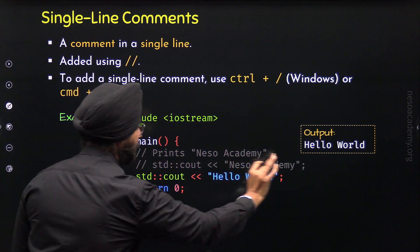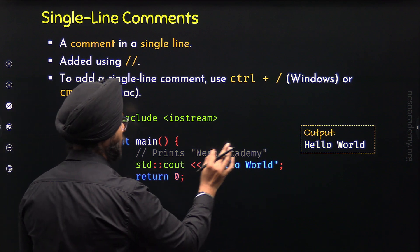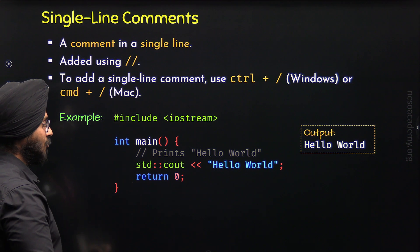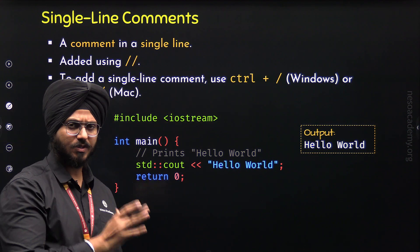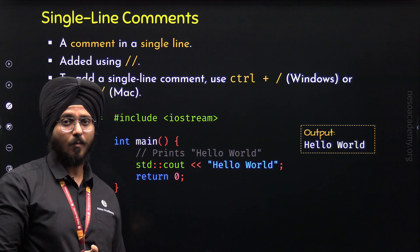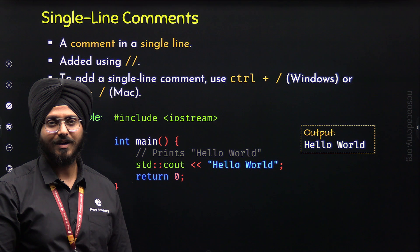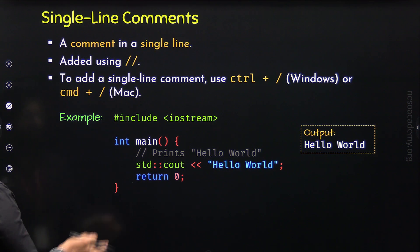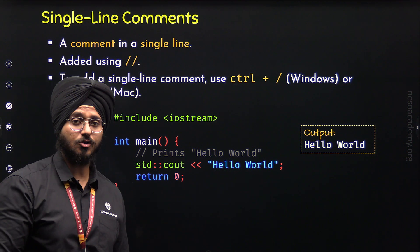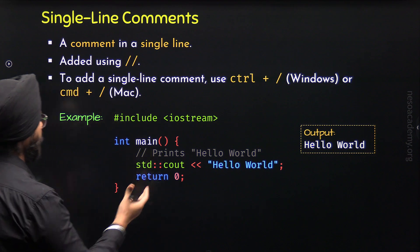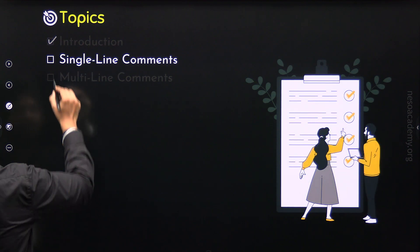So we kept the old version of the code and tested the new version. The new version is working correctly, so now we can remove the old commented-out line. We can update the comment to say 'Print Hello World' to make it clearer. In this way, with the help of a single line comment, we can comment out a specific line of code to test a new version. This is not just the case with single line comments — if we want to comment out a block of code or multiple lines, we can use multi-line comments, which we will learn about next.